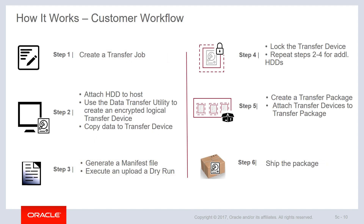Now let's look at the workflow. First, create a transfer job using the console or the data transfer utility, selecting the bucket and compartment as the destination. To create a transfer device, attach the hard drive to a host, ensure there are no existing partitions — if there are, delete them before you begin. The data transfer utility will create a volume and mount it for copying data. You can use standard OS commands to transfer data to this volume, where it is then encrypted. Once done, generate a manifest file using the data transfer utility. The manifest file contains index and hash information for all files and is used to verify data integrity during transport. It's also used to create an upload dry run report, which compares all files in the container with the manifest to ensure there are no naming clashes.